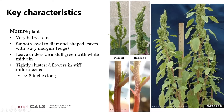As a mature plant, red root pigweed has very hairy stems. It has smooth oval to diamond-shaped leaves with wavy margins and a dull green underside with a white mid-vein. Another distinguishing feature is its inflorescence — the cluster of flowers — which tends to be tightly packed and stiff, growing about two to eight inches long, as opposed to the more open and sparse inflorescence of Powell amaranth and other pigweeds.